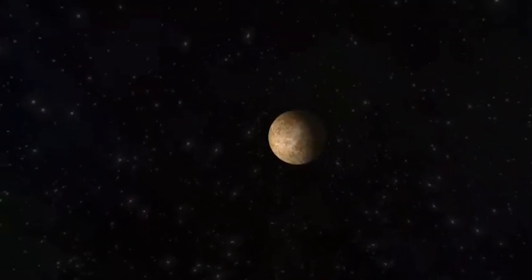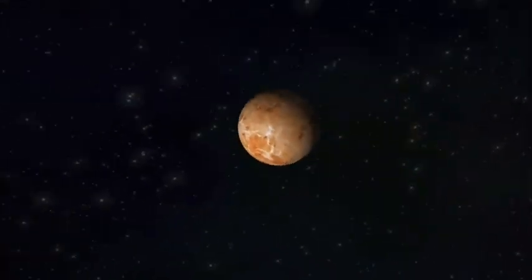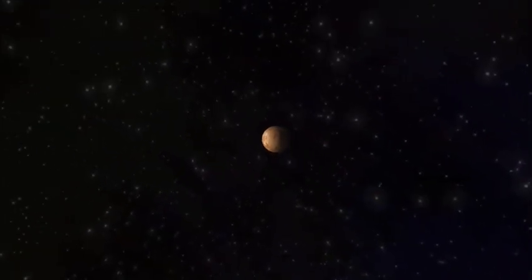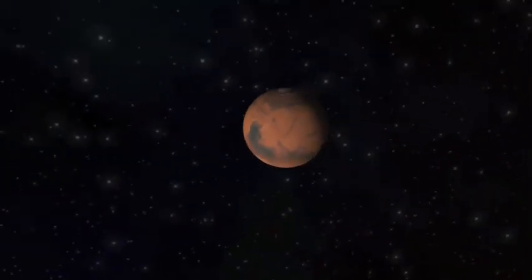The planet Mercury is the closest to the Sun, followed next by our sister planet Venus. Our own Earth is third. Our neighbor Mars.